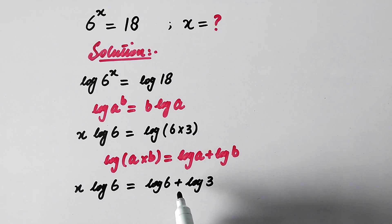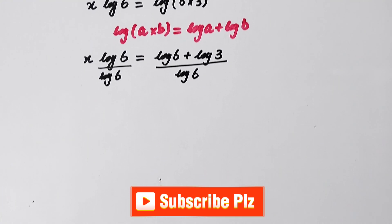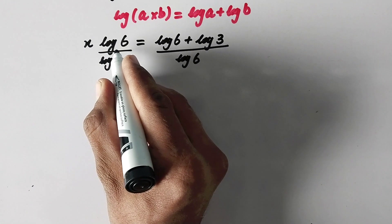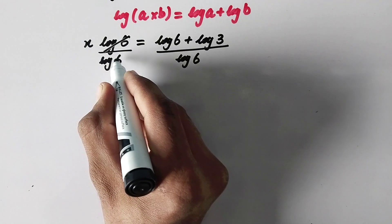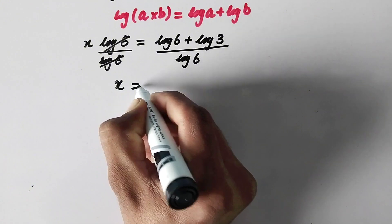Since we have to find the value of x, to eliminate this value we will divide by log of 6. To balance the equation, we will also divide the right-hand side by log of 6. This log of 6 will be cancelled by this log of 6.